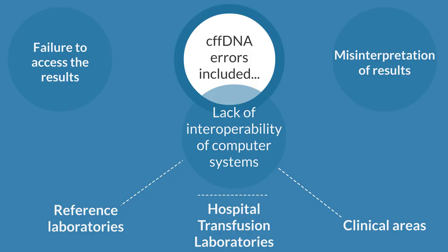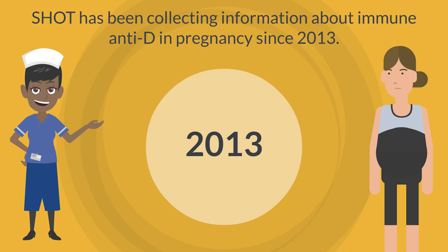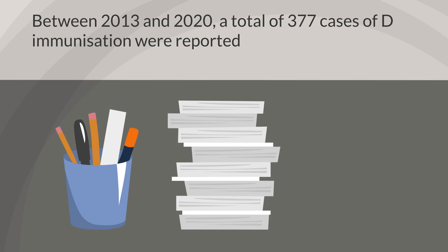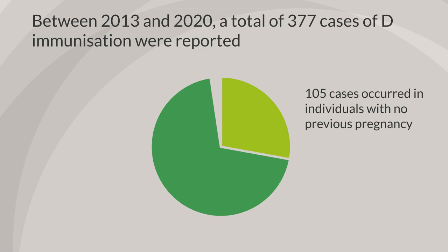SHOT has been collecting information about immune anti-D in pregnancies since 2013. Between 2013 and 2020, a total of 377 cases of de-immunisation were reported: 105 cases occurred in individuals with no previous pregnancy, and 272 in individuals with a previous pregnancy.